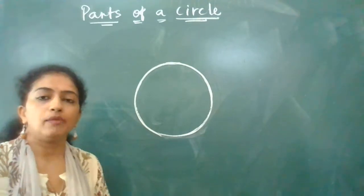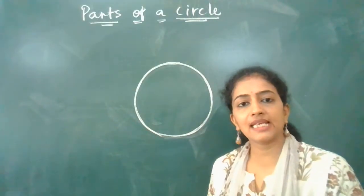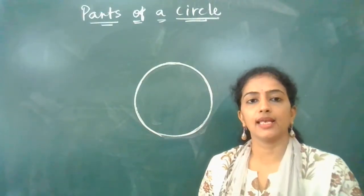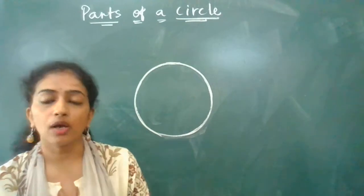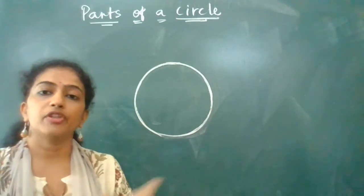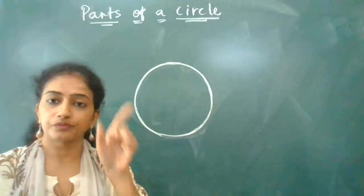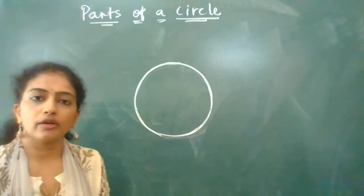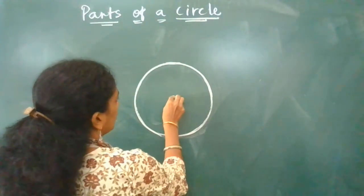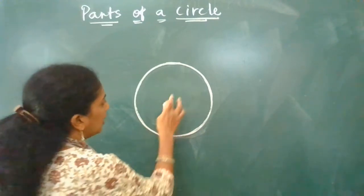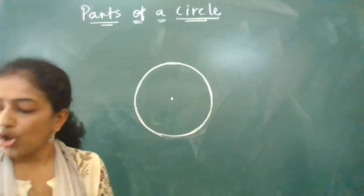This is our circle. Always remember when you start marking the parts of the circle, it basically starts with the center point. This center point we get when you draw a circle with your rounder — this rounder can also be called a compass. When you draw a circle with a rounder, you will get a small tiny dot in the middle if you have drawn it properly.